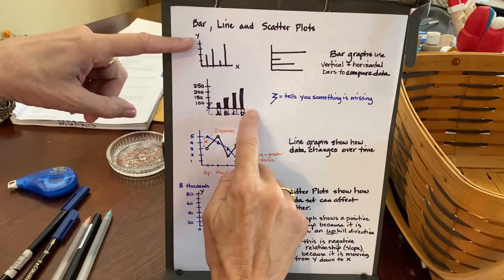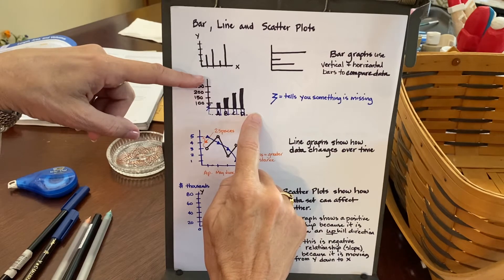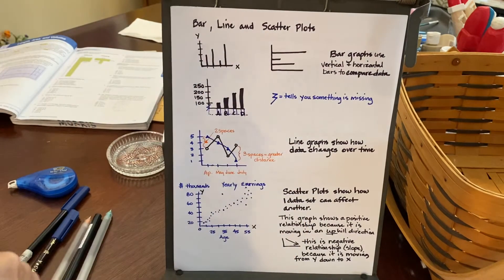So horizontally, it's always the x-coordinate, and vertically, it's always the y. You just don't see the x and y's on these things.